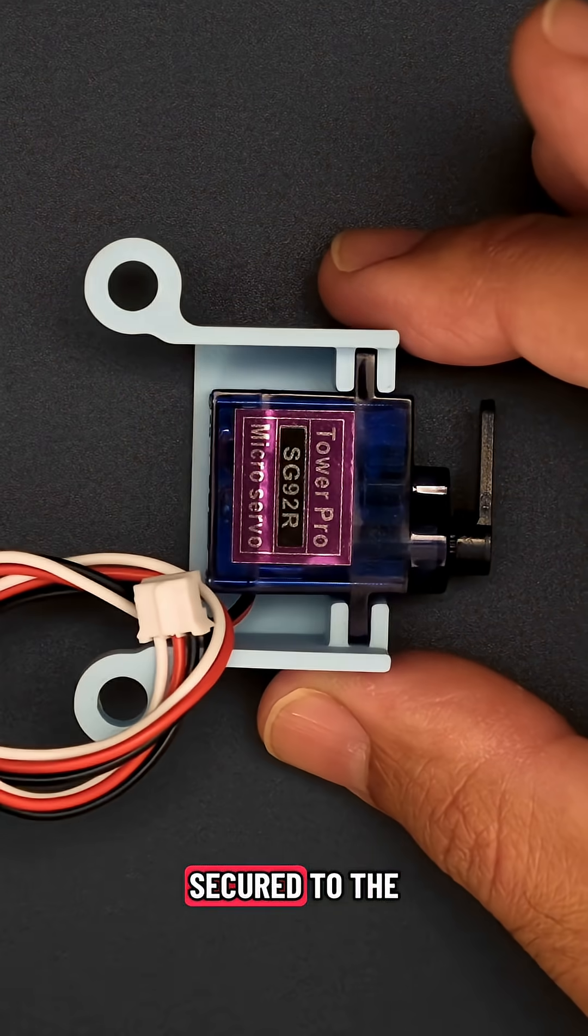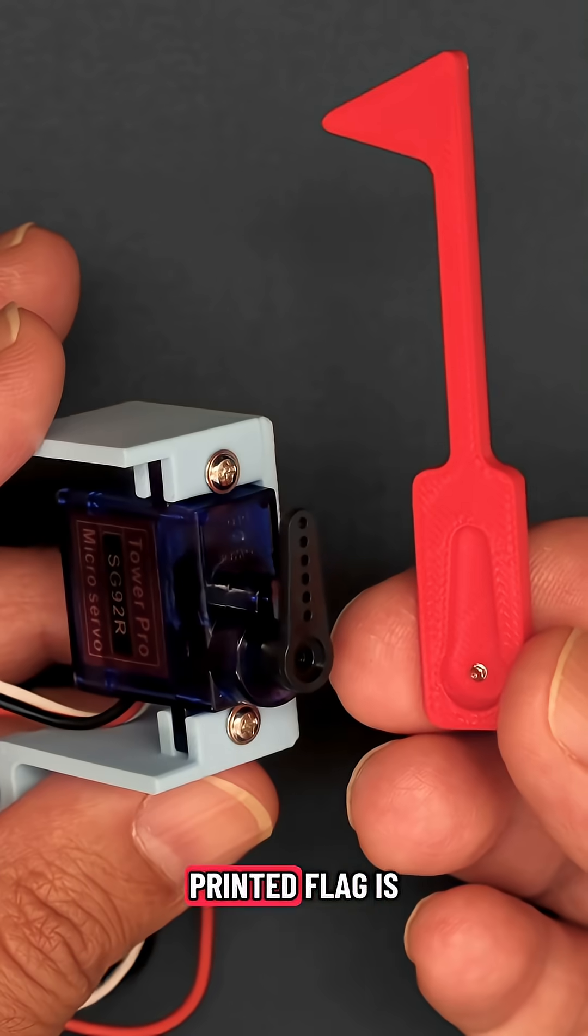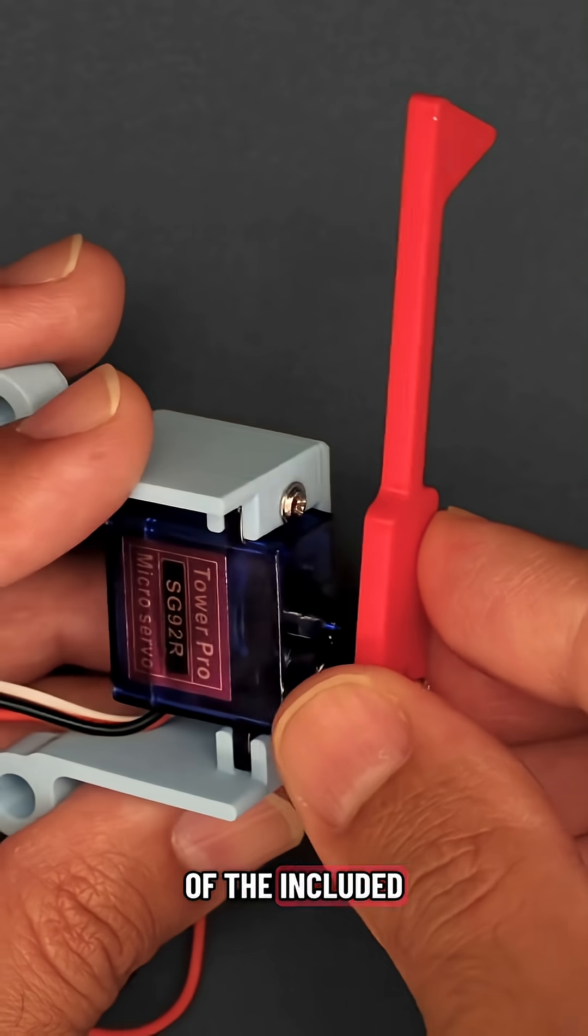The servo is secured to the 3D printed mount, while the 3D printed flag is secured to one of the included servo horns.